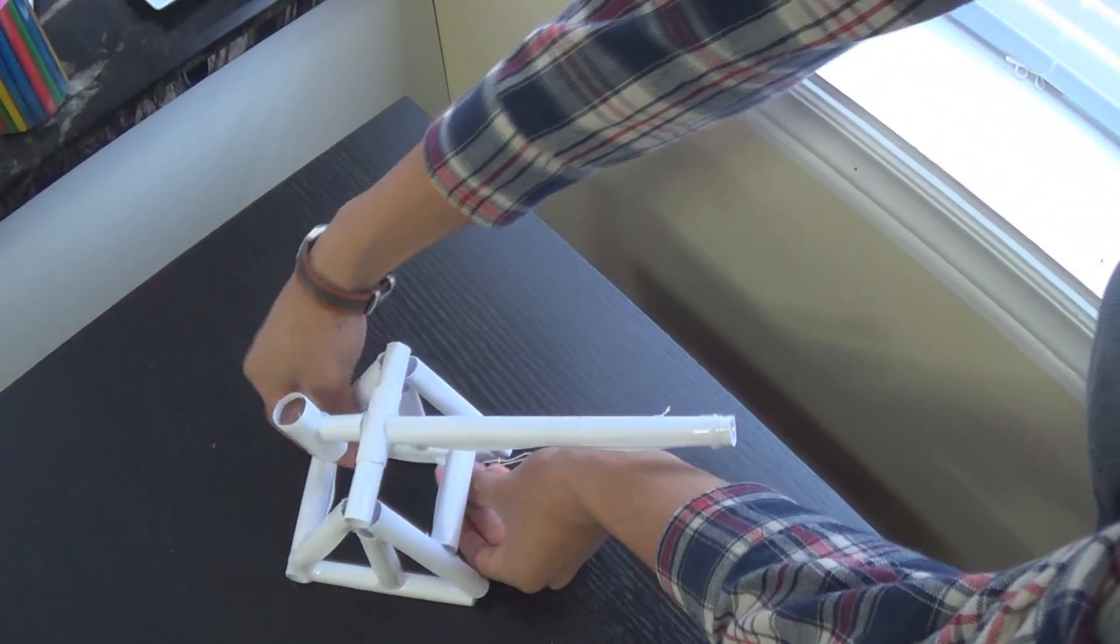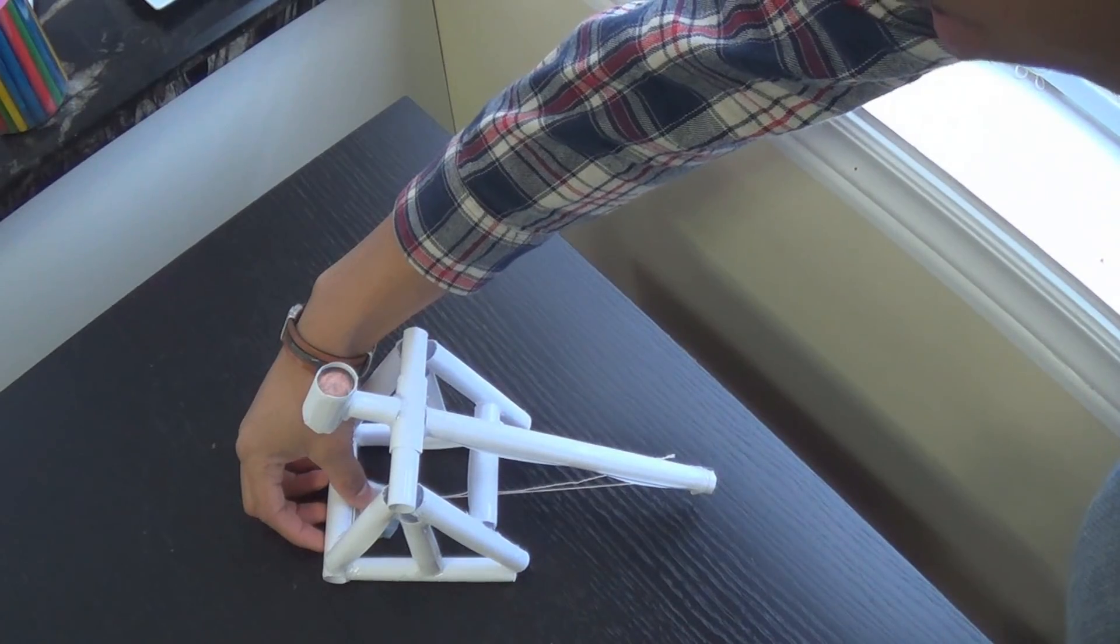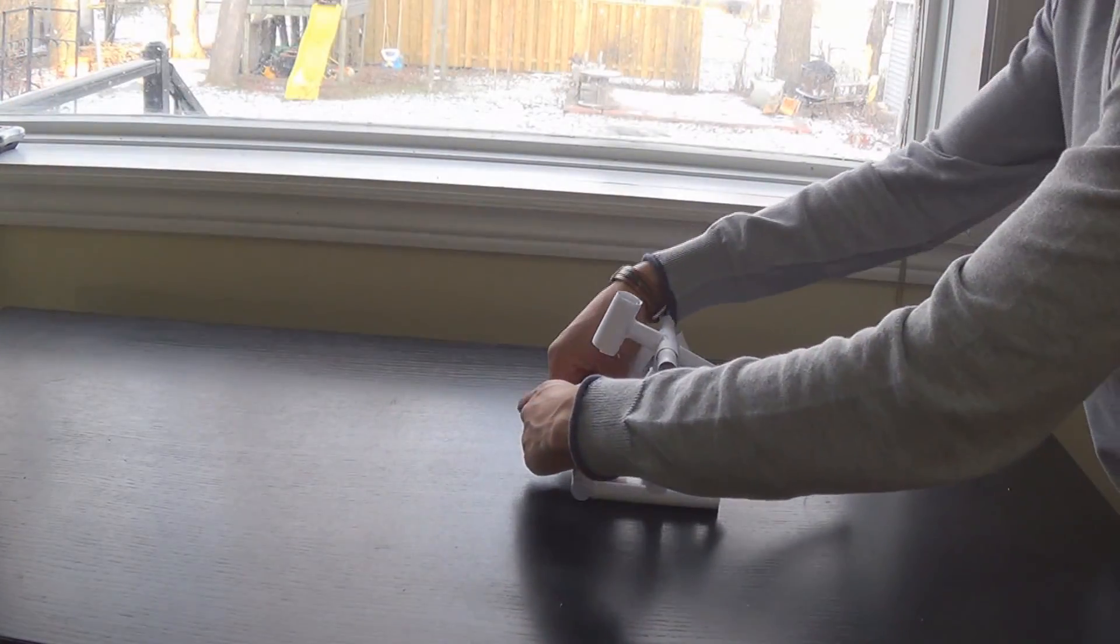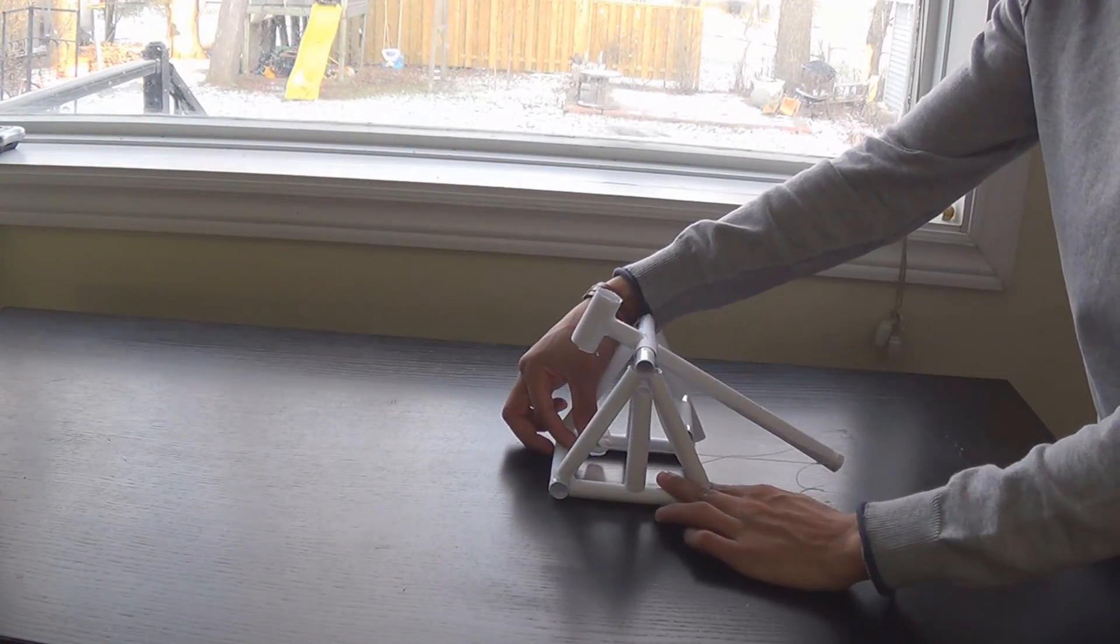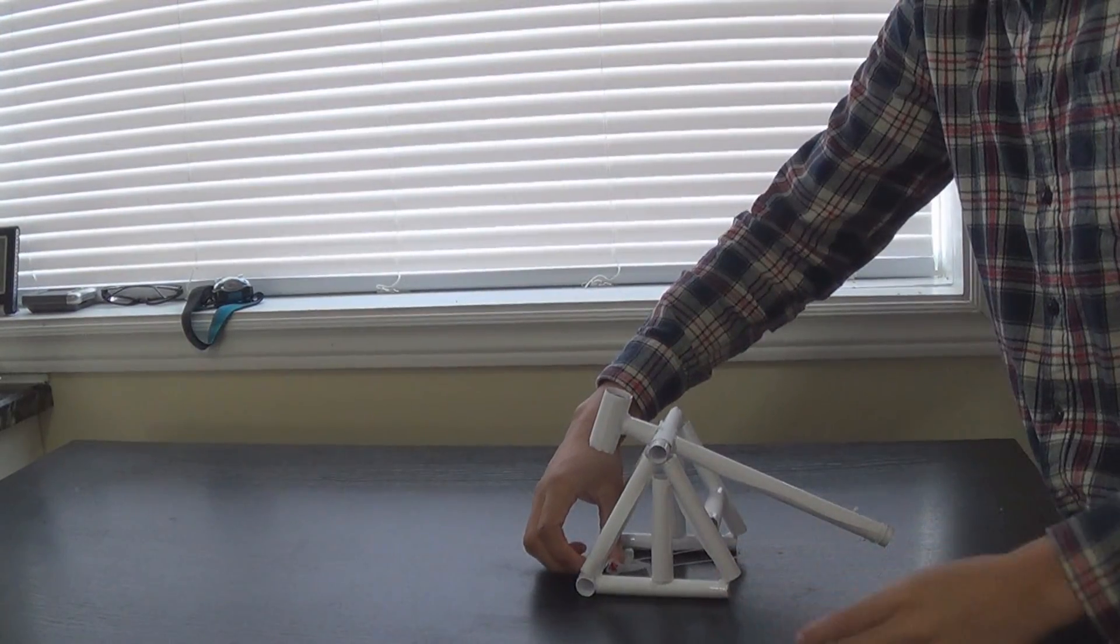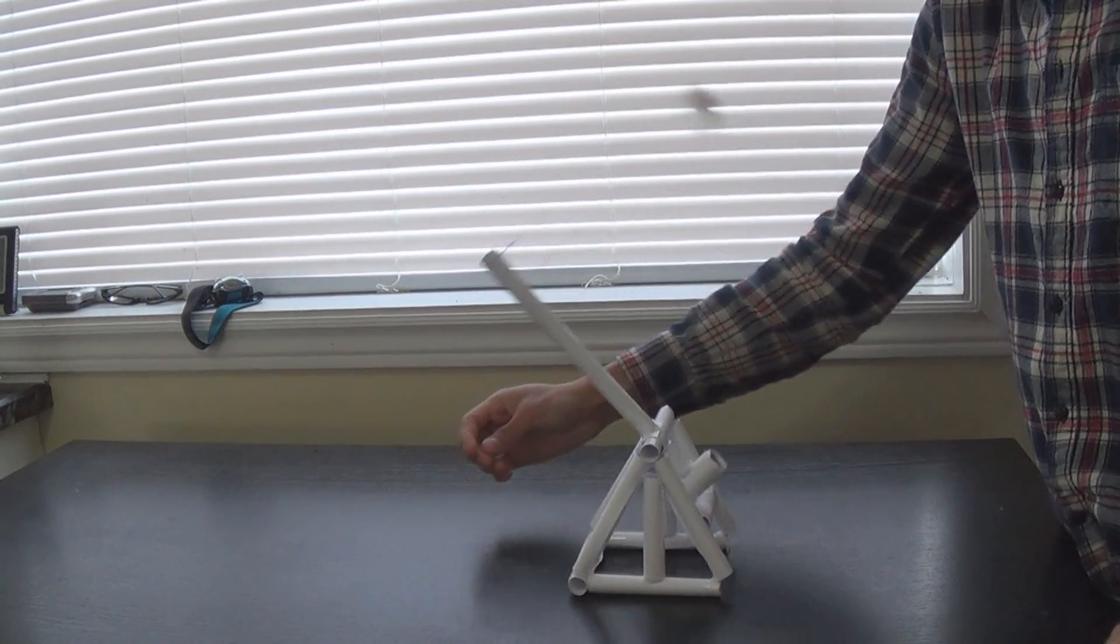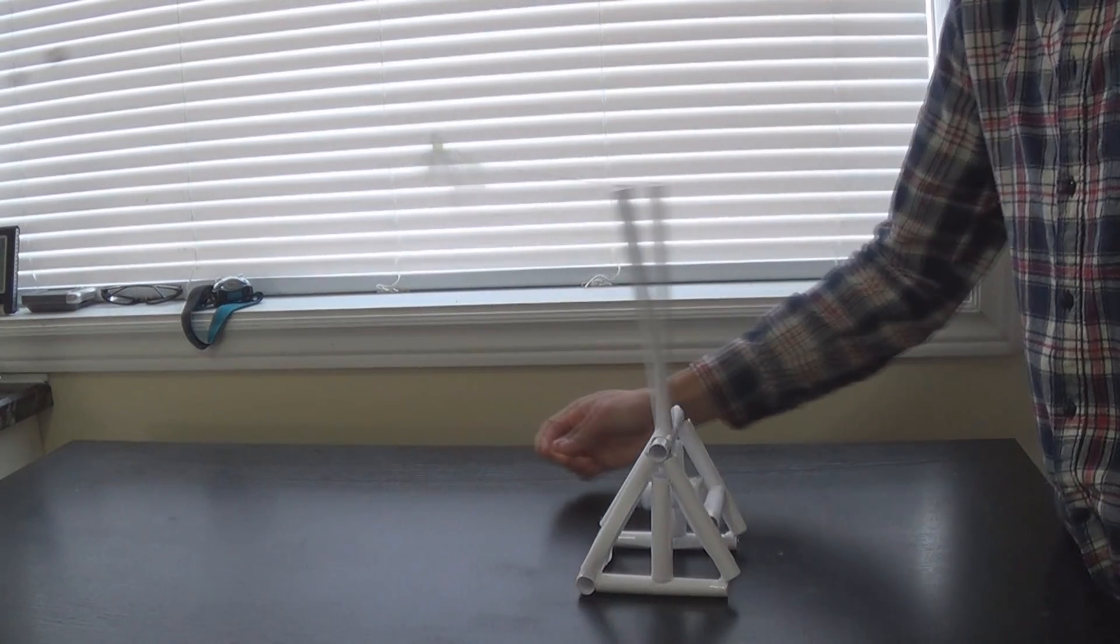Hey this is Josh from JoshBuilds and today we're going to be making a paper catapult. Now at any point in this tutorial if you want to skip ahead to a certain point, you can check in the description. I've listed all the times where different parts are started at. So if you want to skip to building the arm, you can check in the description and see when that occurs.